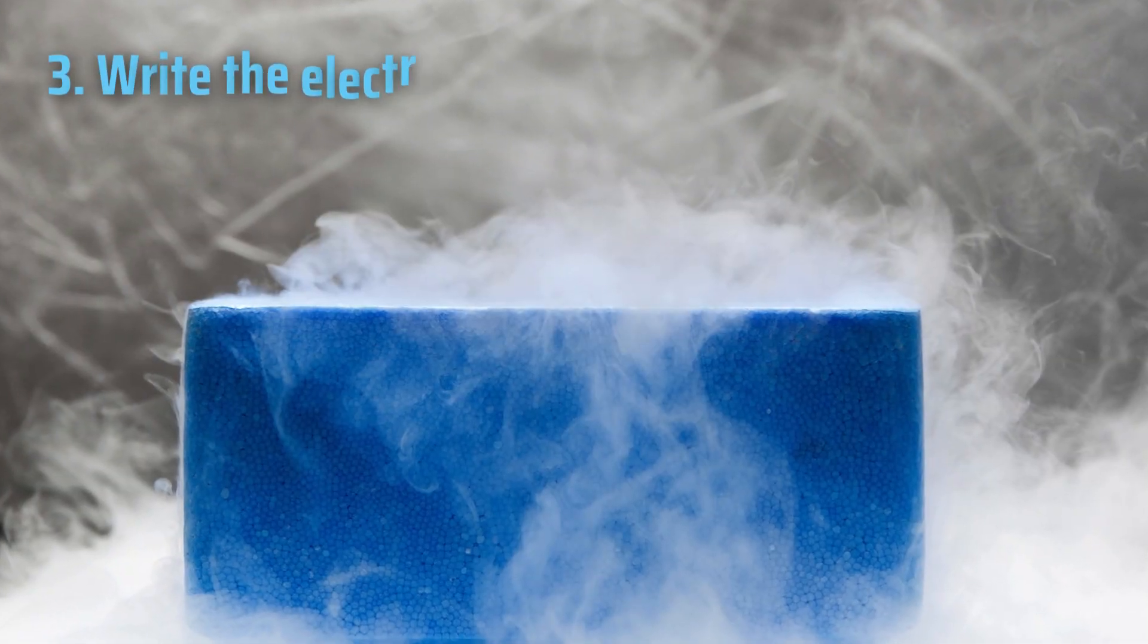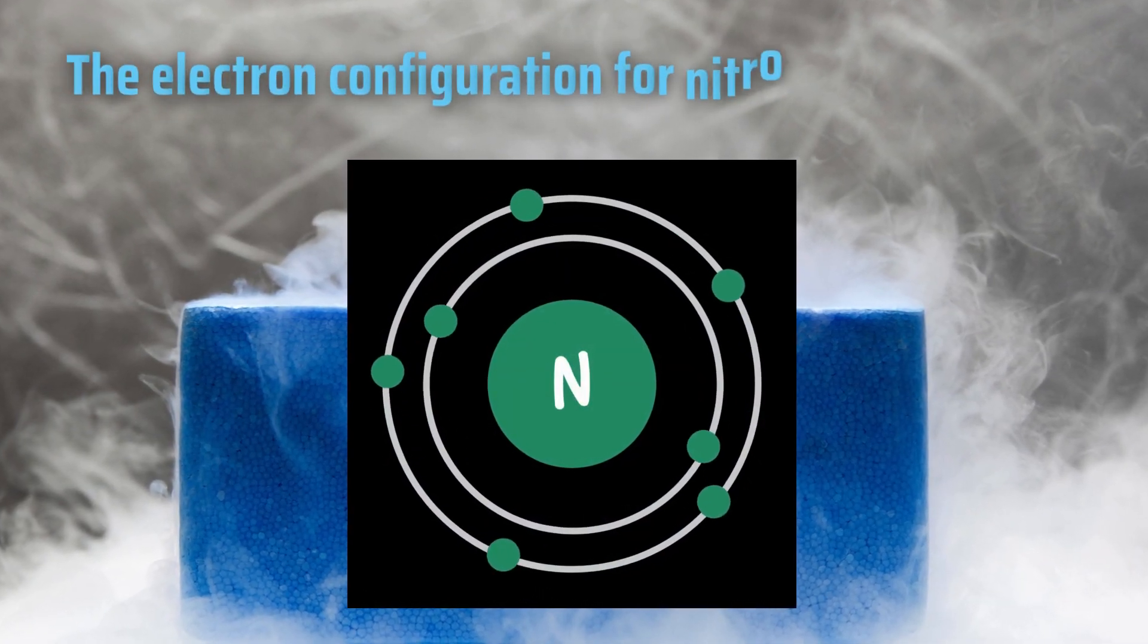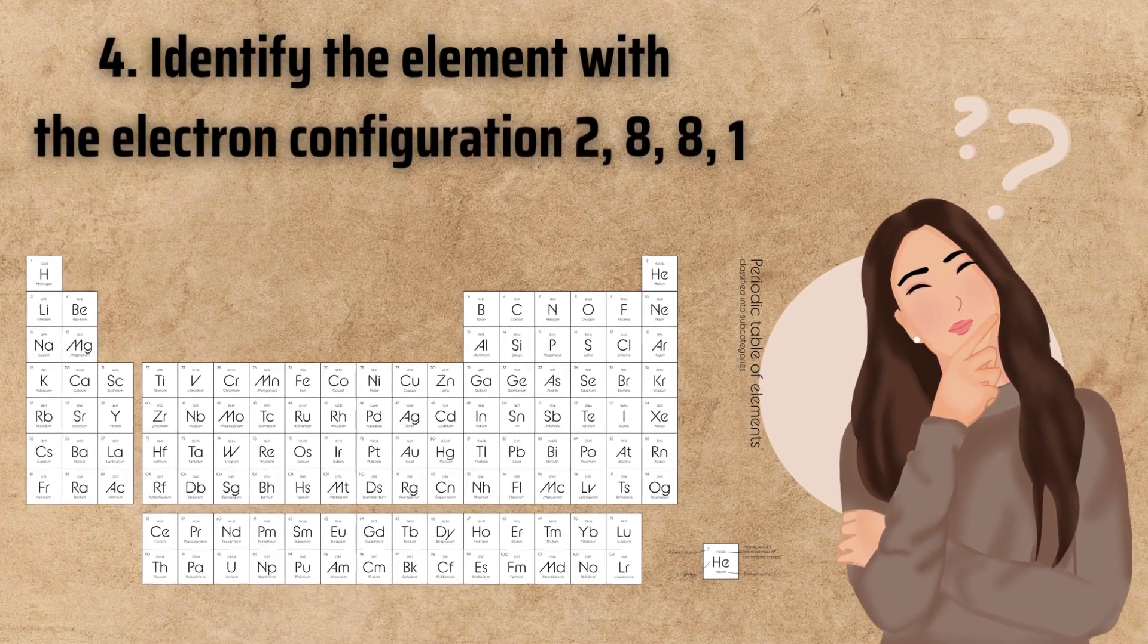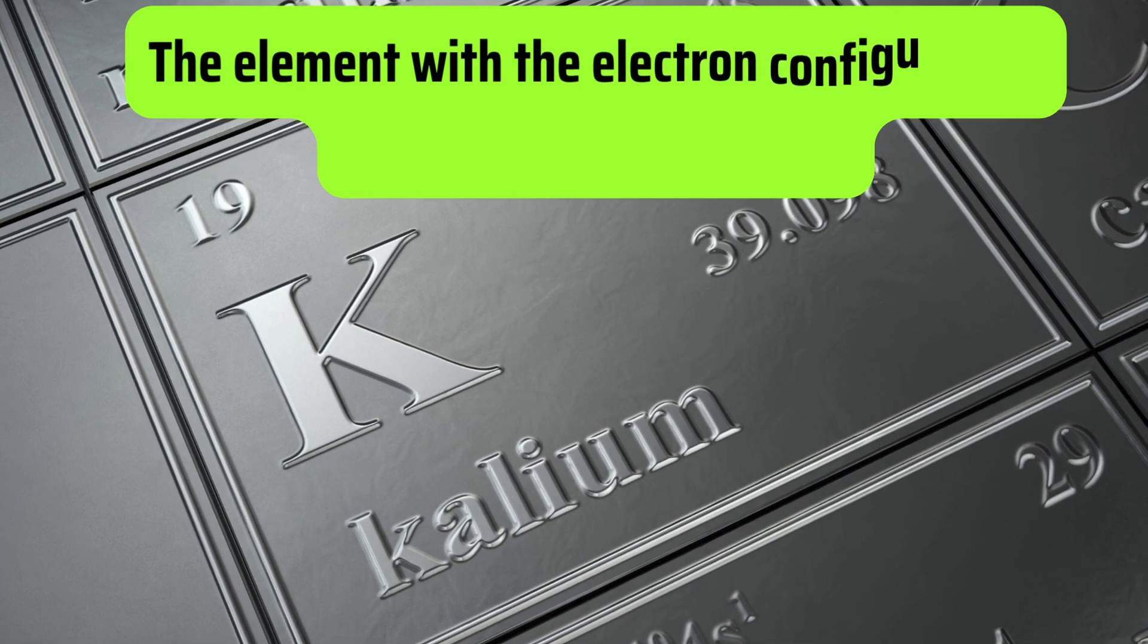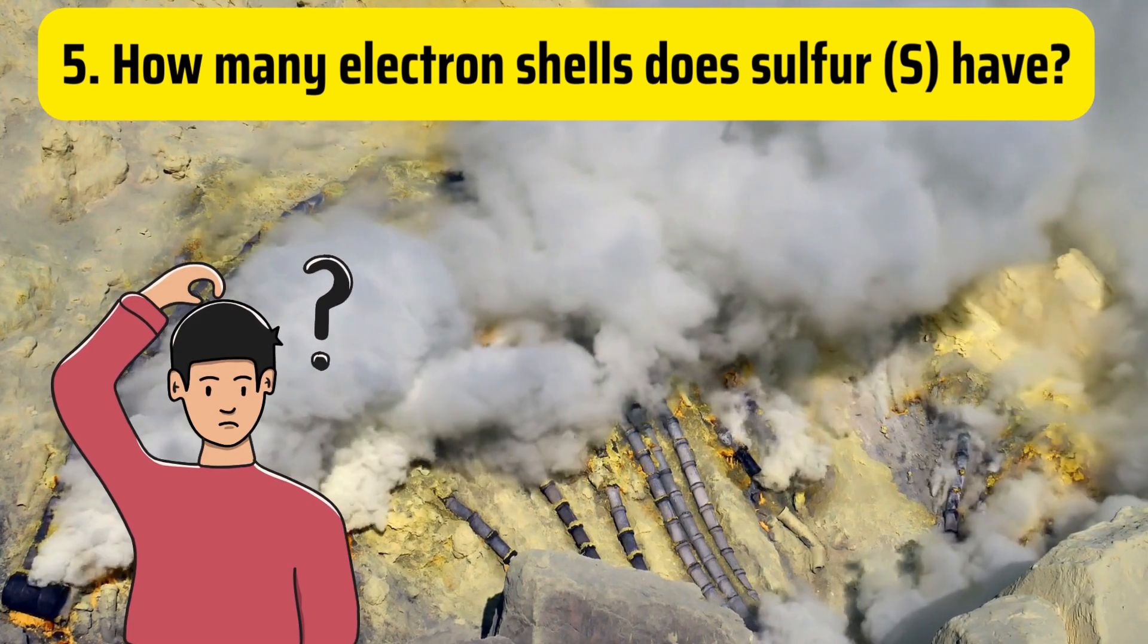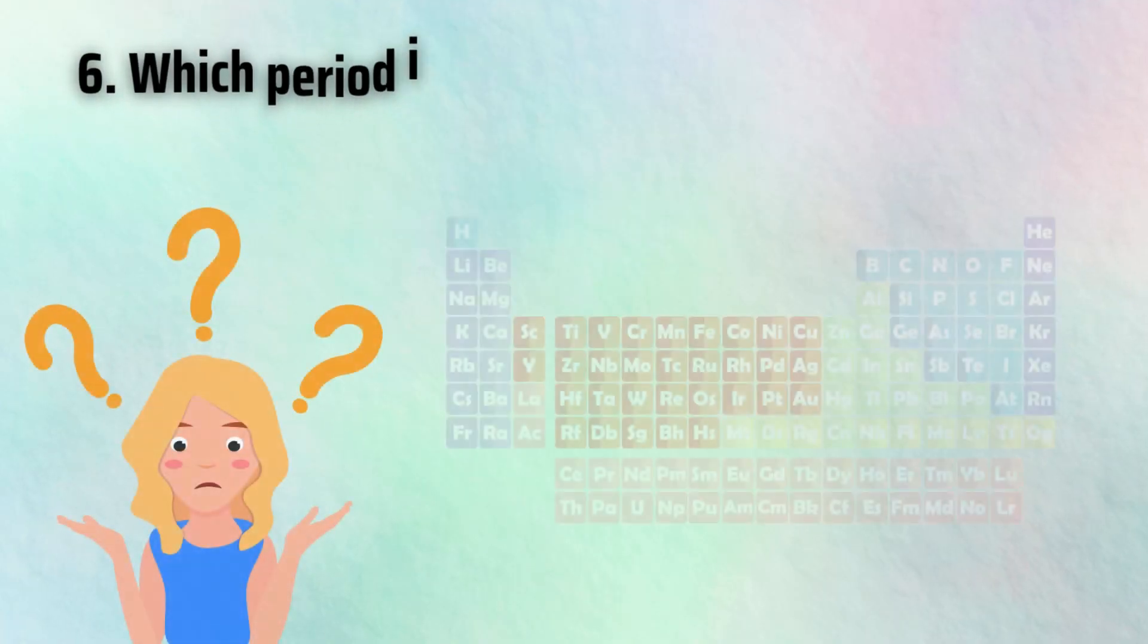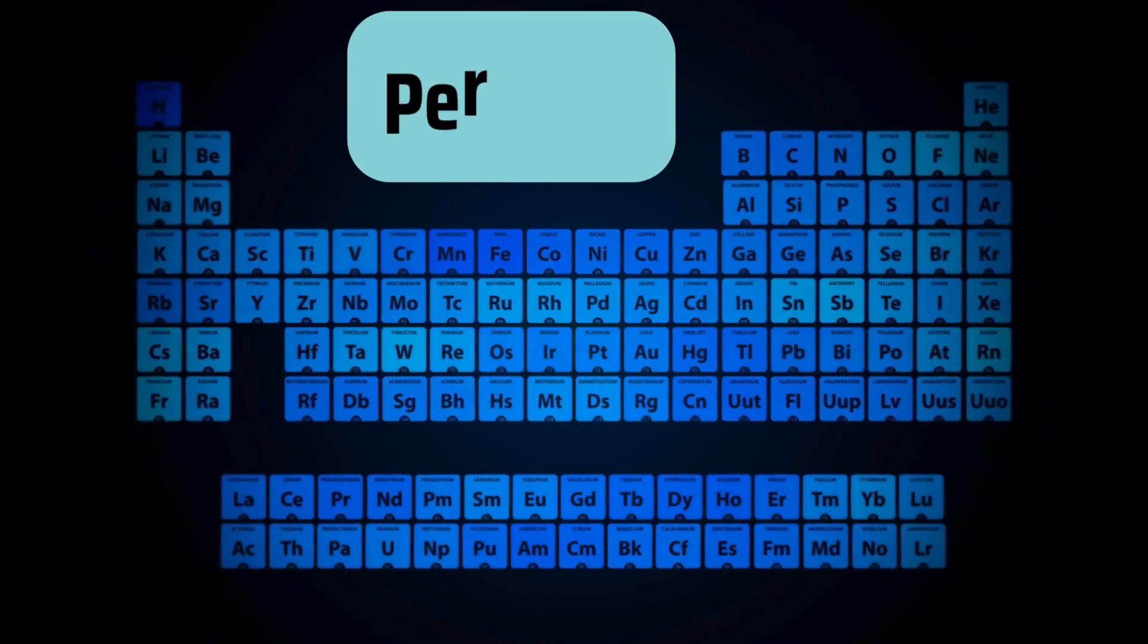Question 3. Write the electron configuration for nitrogen. The electron configuration for nitrogen is 2 comma 5. Question 4. Identify the element with the electron configuration 2 comma 8 comma 8 comma 1. The element with this configuration is potassium. Question 5. How many electron shells does sulfur have? Sulfur has 3 electron shells since it is in period 3. Question 6. Which period in the periodic table corresponds to elements with 4 electron shells? Period 4.